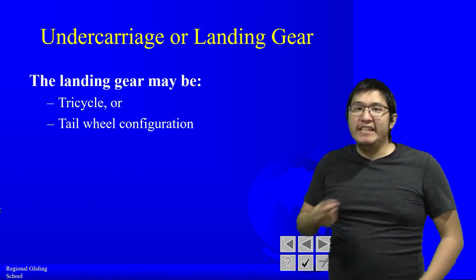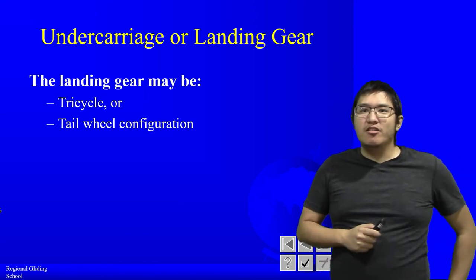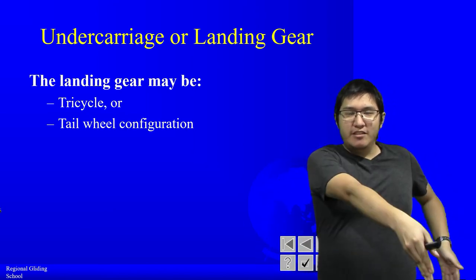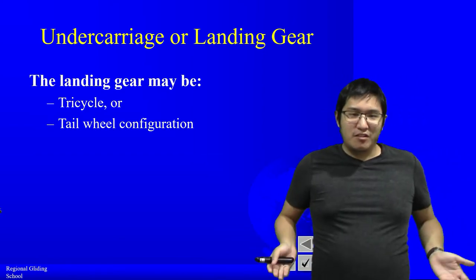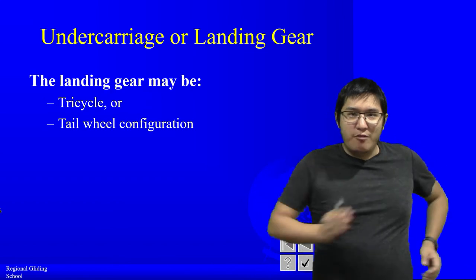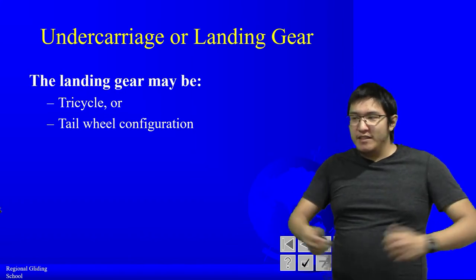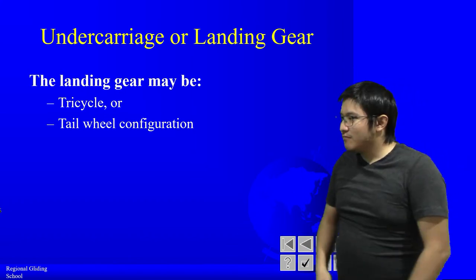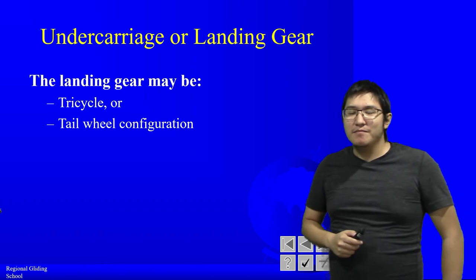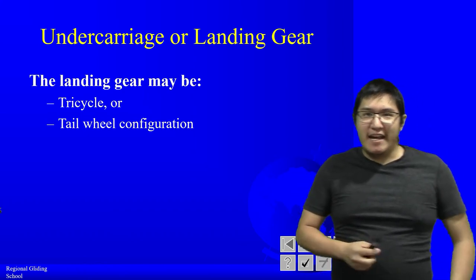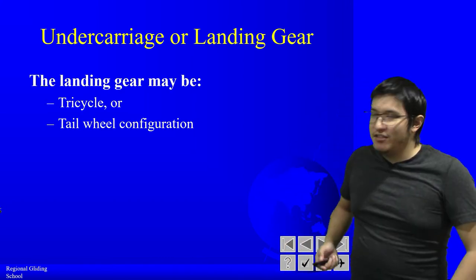There are two types of landing gear configuration. First is the tricycle — two wheels at the back and one nose wheel up front, like a tricycle. This is usually found in modern aircraft such as commercial aircraft and Cessna 172s. Next is the tail wheel configuration, which you may have seen in the tow planes we use — two main wheels at the front and one wheel at the back at the tail.